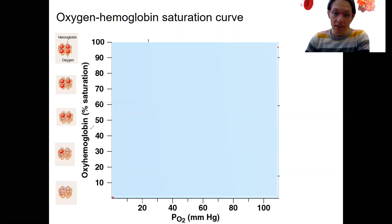This axis is oxyhemoglobin, which is percent saturation. So how many oxygens are bound to hemoglobin? Here it's zero. That's zero percent. This is one oxygen bound, 25 percent. Two, 50 percent. Three, 75 percent. Four, 100 percent saturated.